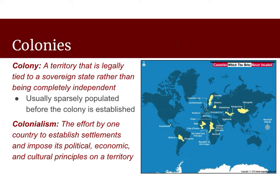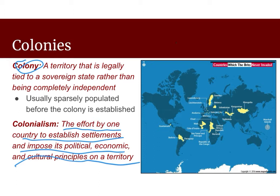The definition of colonialism is the effort by one country to establish settlements and impose its political, economic, and cultural principles on a territory. So you've got this home country that goes and takes over other areas of the world. It establishes a colony. A colony is a territory that's legally tied to a sovereign state rather than being independent. It's usually sparsely populated before the colony is established, but not always. Anytime you have an indigenous people occupying a land before it's colonized, it turns into imperialism.